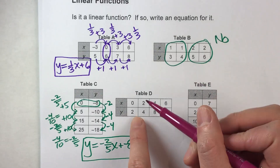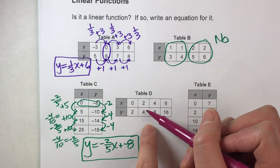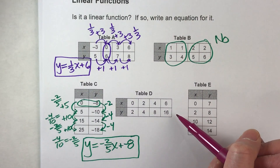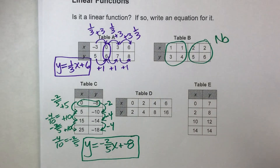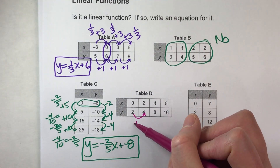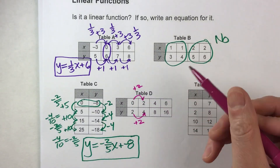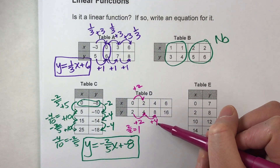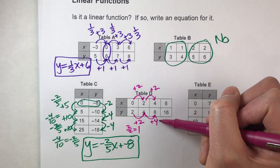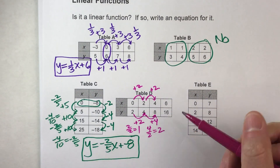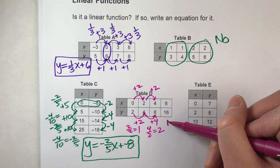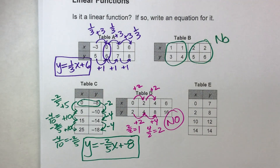For table D, first is it a function? 0 gives us 1 output, 2 gives us 1 output, 4 gives us 1 output, and 6 gives us 1 output. Every input gives only 1 output, so it is a function. Now let's check if it's linear. The rise goes up 2 and the run goes up 2, so the slope is 2 over 2, which is 1. But for the next pair, the rise is 4 and the run is 2, giving a slope of 4 over 2, which is 2. The slope changed from 1 to 2, so this is not linear.